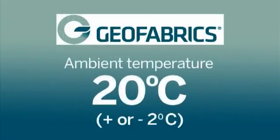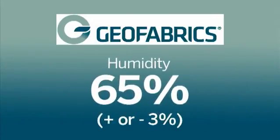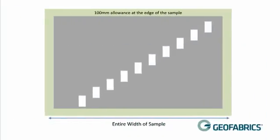The standard environment for this test method is an ambient temperature of 20 degrees Celsius plus or minus 2 degrees Celsius and humidity of 65% plus or minus 3%. Ten rectangular specimens per sample are required. The specimens are sampled so that they are widely spaced as possible over the whole surface of the sample, so that their positions are symmetrically different in the longitudinal and cross-directions.